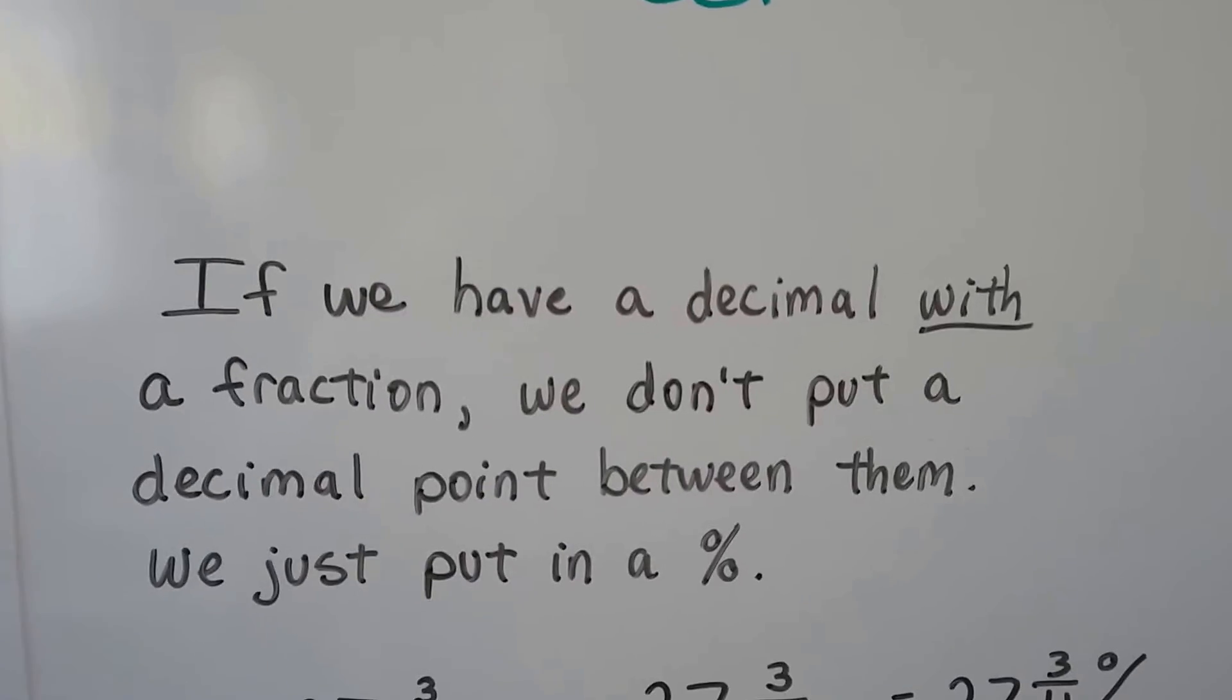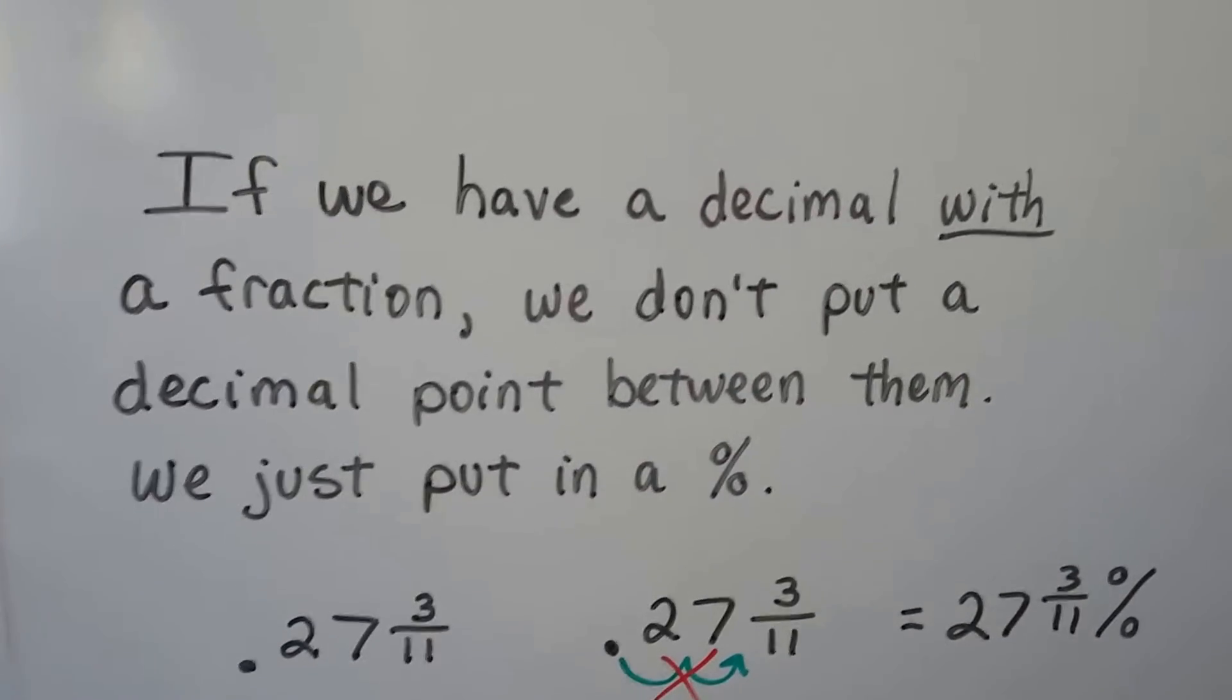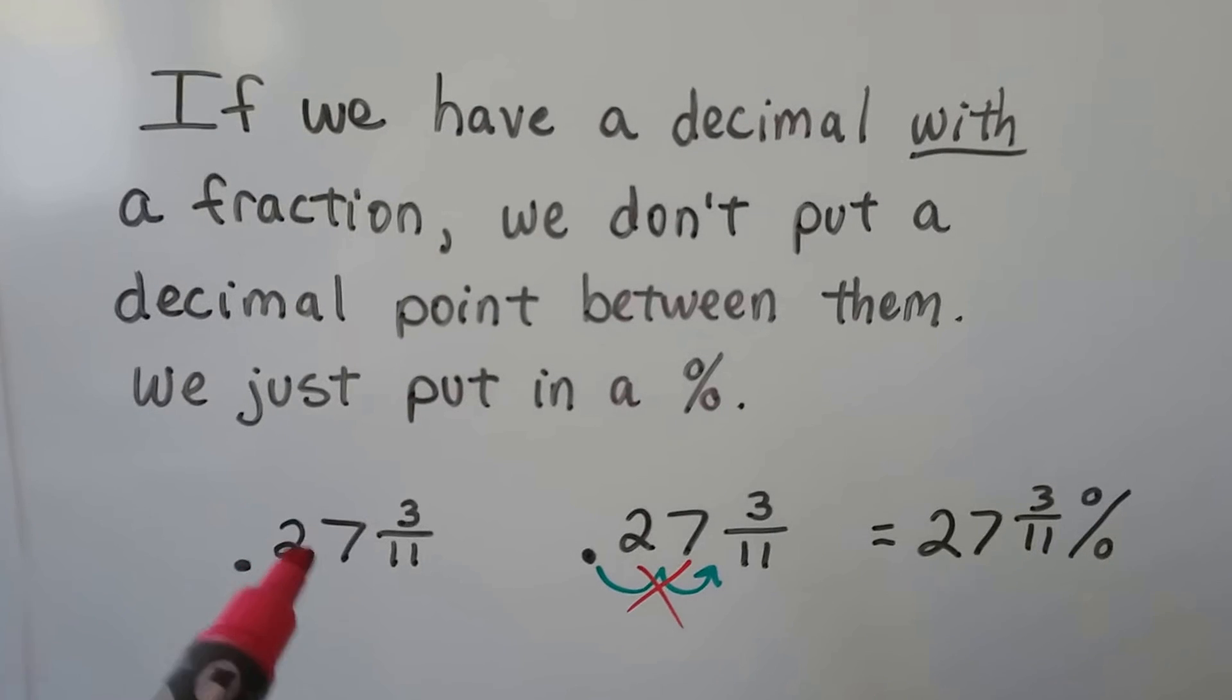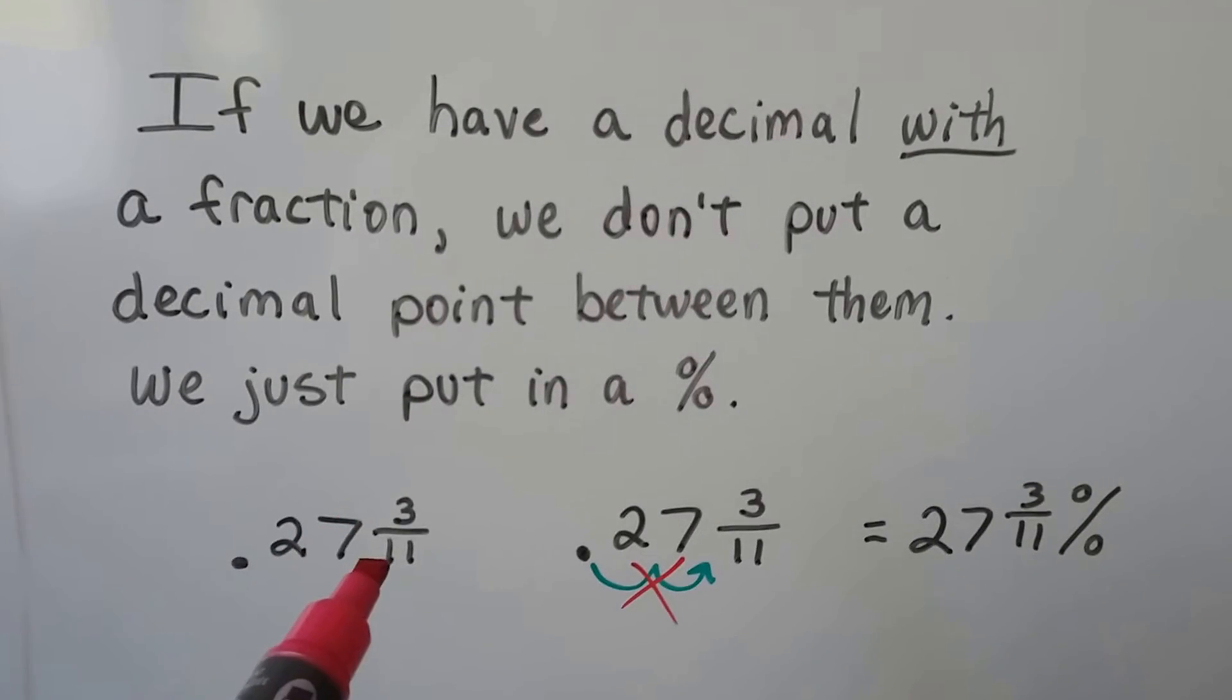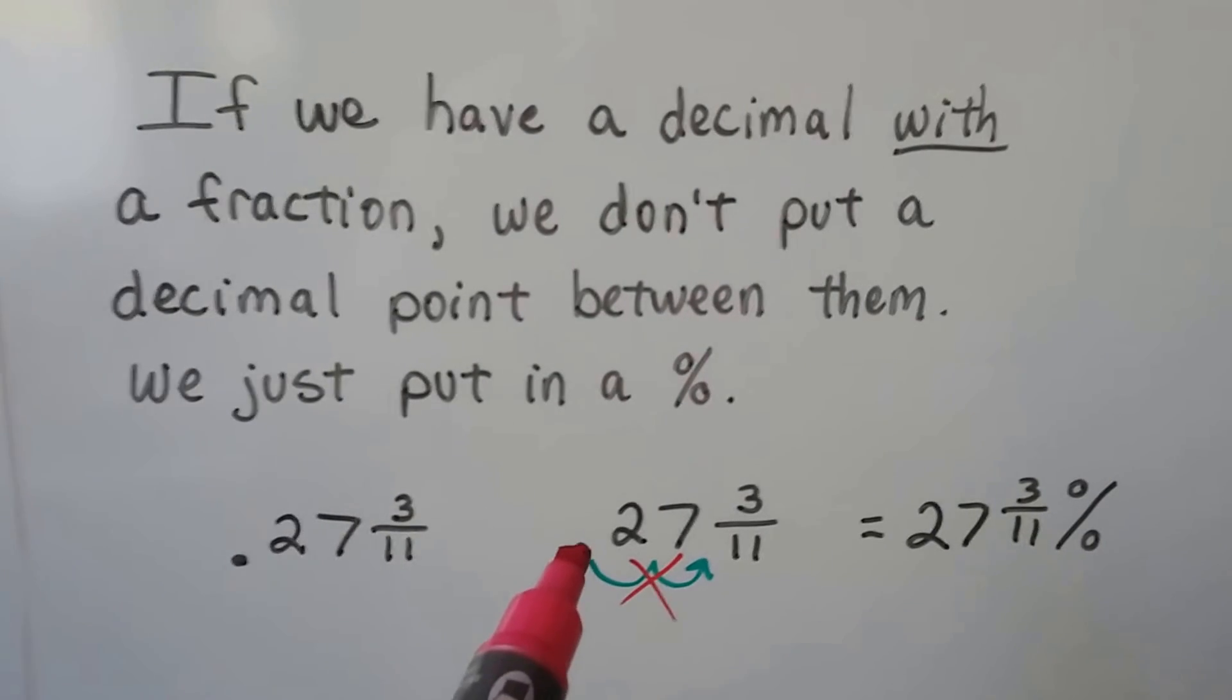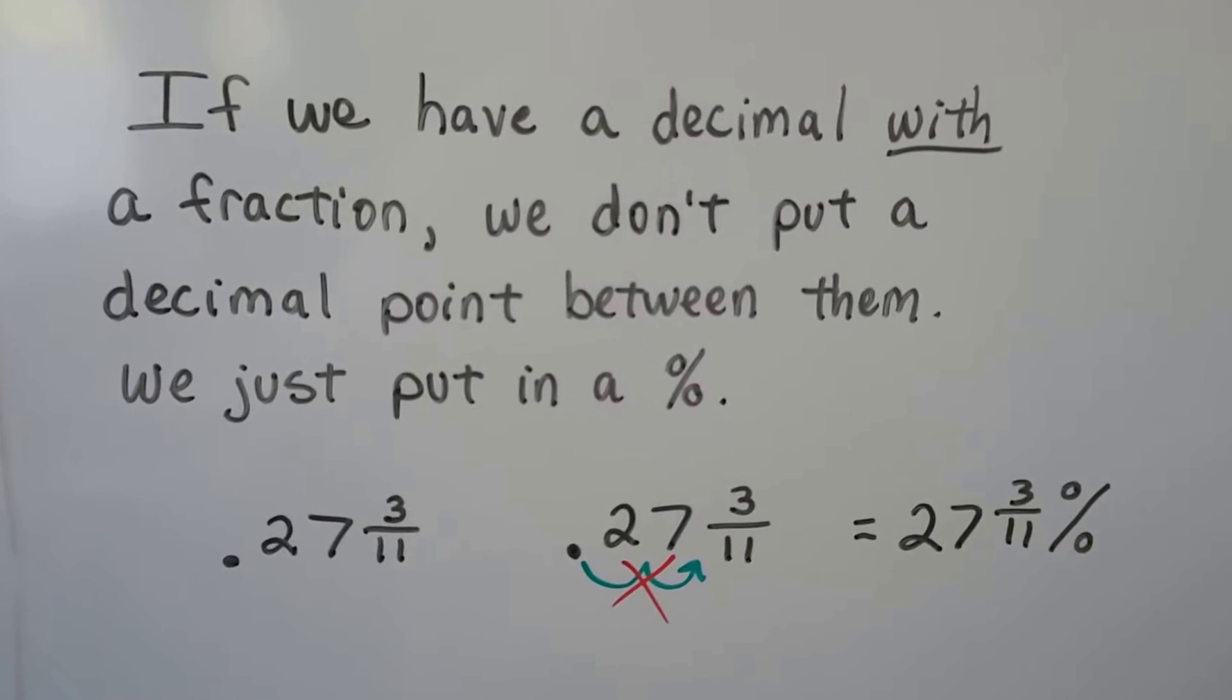If we have a decimal with a fraction, we don't put the decimal point between them, we just use a percentage sign. If you see .27 and 3 elevenths, we don't have to worry about the decimal point. Just take away the decimal point and write the percentage sign.